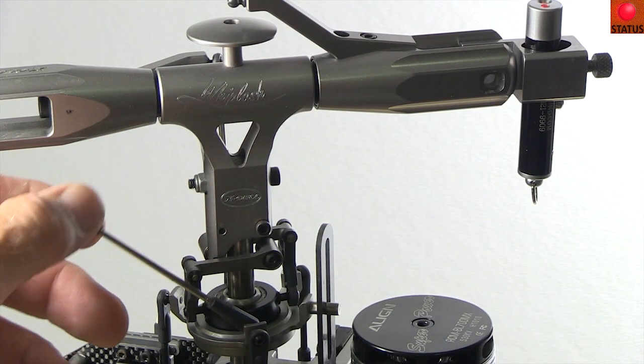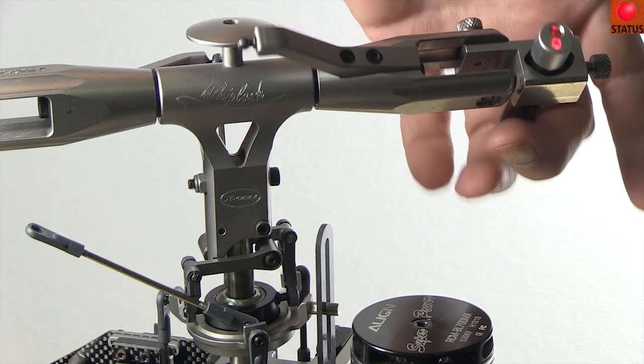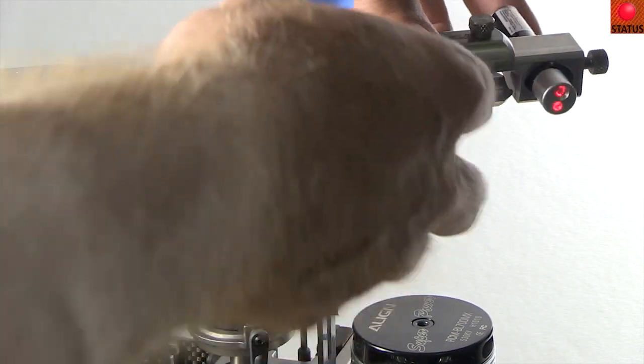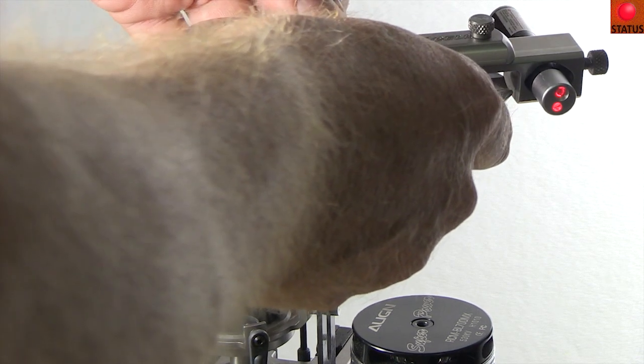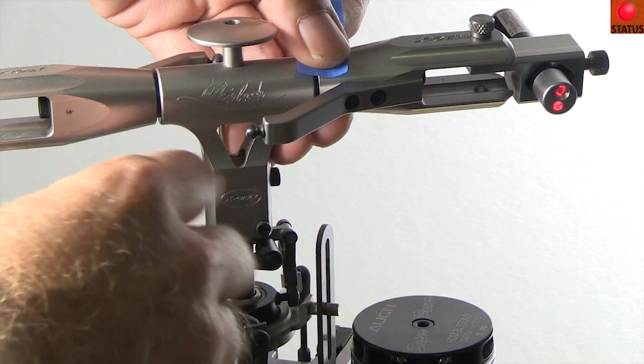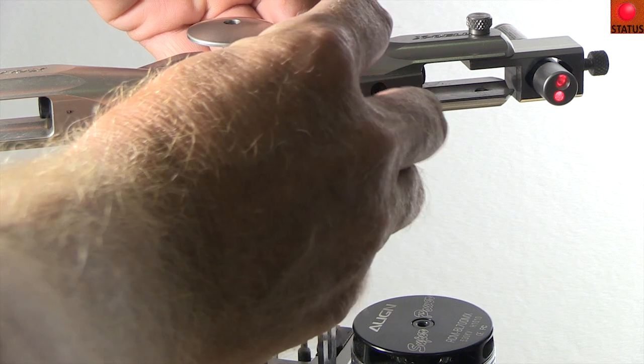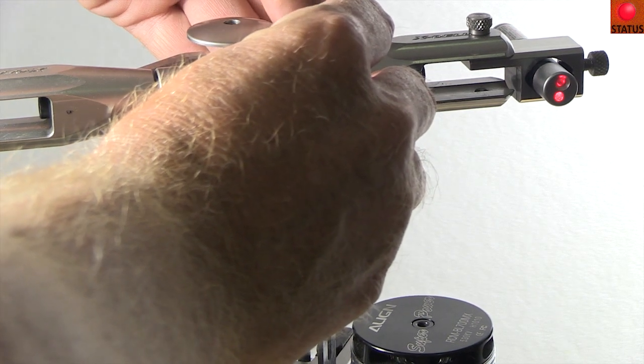Now remove the link from the blade grip and get a piece of blue painter's tape. Hold the link over the ball and use the tape to fix the grip so it can't move. Like I said, you can use any swash plate level you have, but I think if you watch this you'll see how easy the laser is to use.